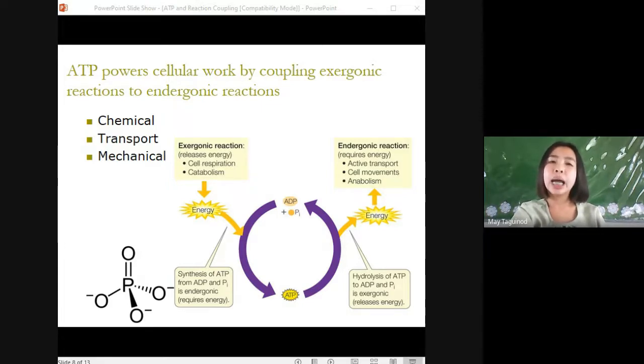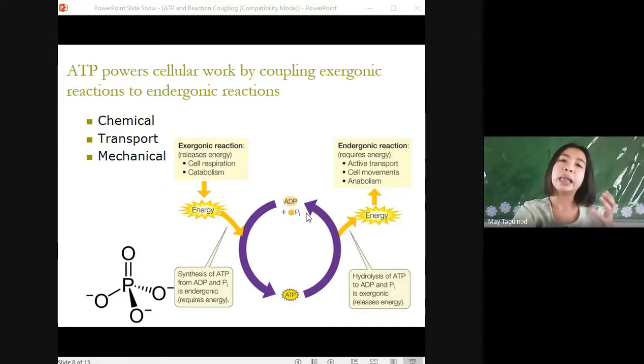To do work, cells manage energy resources by energy coupling. The use of an exergonic process to drive an endergonic one. So most energy coupling in cells is mediated by the energy or the ATP.